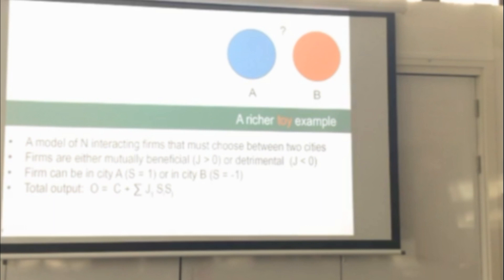A richer toy example. Optimizing O over S in a « NP-hard » problem. Test algorithms need a run doubly-to-fixed the problem. So imagine a model of N-interacting firms that must choose between two cities. They have to operate either in city A or in city B. And we're going to assume that firms are either beneficial or detrimental to each other. And just to make the math simple, if the firm is in city A, its index S is 1, and if it's in city B, the S index is minus 1. And in this model, the total output is given by this formula, which just means that firms want to be in the city where they can cooperate maximally and put in the other city firms with which they have detrimental interactions.